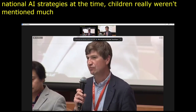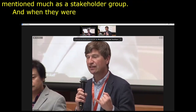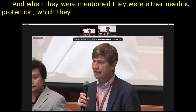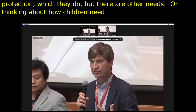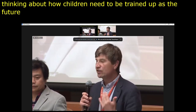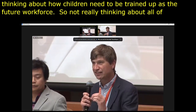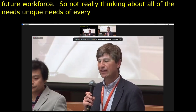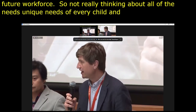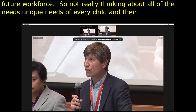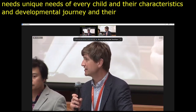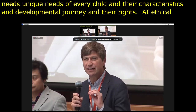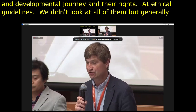When children were mentioned, they were either needing protection — which they do, but there are other needs — or thinking about how children need to be trained up as the future workforce. So not really thinking about all the unique needs of every child and their characteristics, developmental journey, and their rights. We also looked at ethical AI guidelines. In 2019, there were more than 160 guidelines, and generally found not sufficient attention being paid to children.